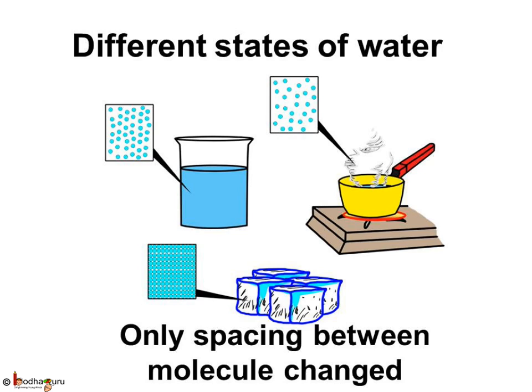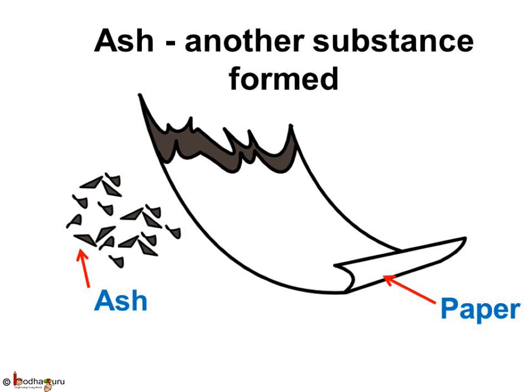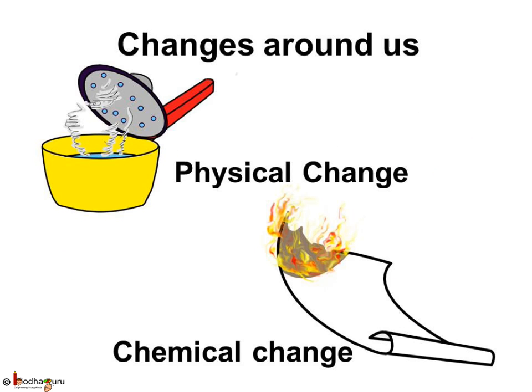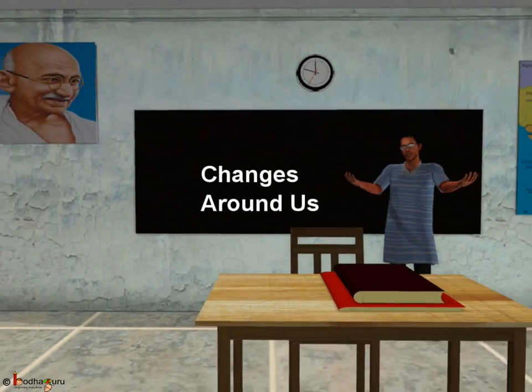That is, it's a physical change. But if we break the molecule of a substance, like the example of paper turning into ash, it is not the same substance anymore. So in a chemical change, the molecules break into atoms and atoms rearrange themselves to form new molecules, and hence this change is irreversible. This is all for today. Bye-bye children!